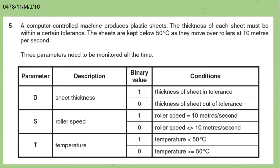Let's move on to the first question. The past paper code is in the top left corner of your screen. A computer-controlled machine produces plastic sheets. The thickness of each sheet must be within a certain tolerance. The sheets are kept below 50 degrees centigrade as they move over rollers at 10 meters per second. Three parameters need to be monitored: D (sheet thickness, 1 = in tolerance, 0 = out of tolerance), S (roller speed, 1 = 10 m/s, 0 ≠ 10 m/s), and T (temperature, 1 = below 50°C, 0 = ≥ 50°C).